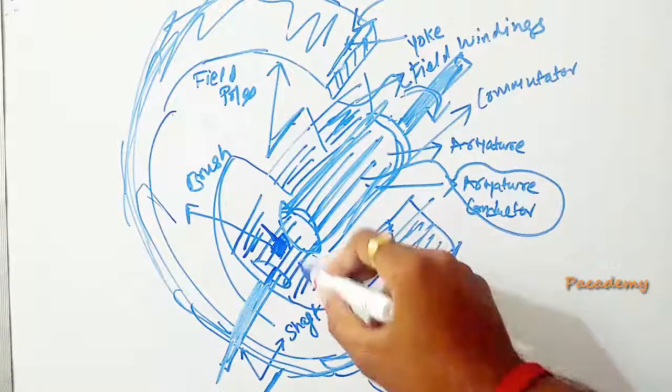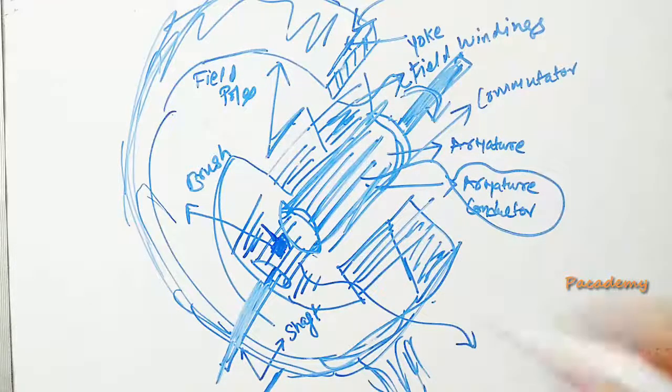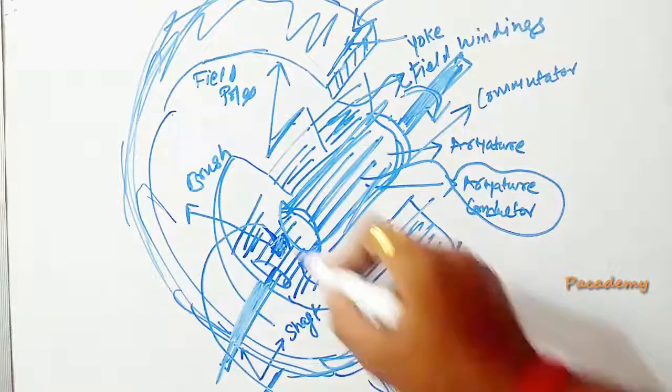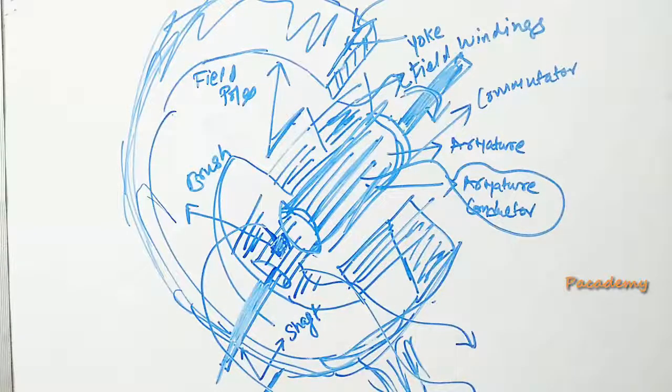And then there are the commutator segments which act as a rectifier, and the brushes are connected to the commutator segments which will be used to take out the current or induced EMF to the external circuit.